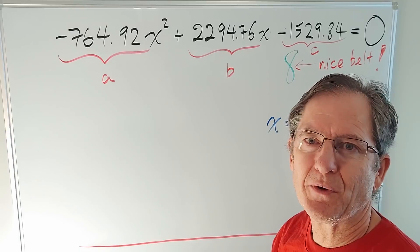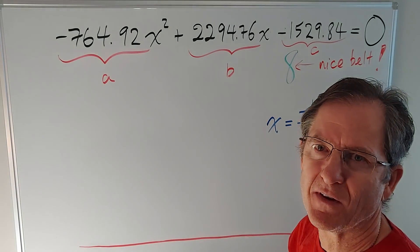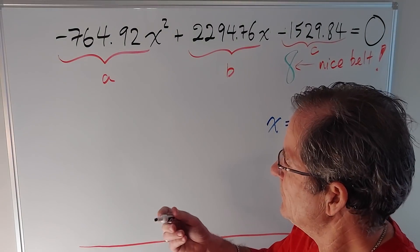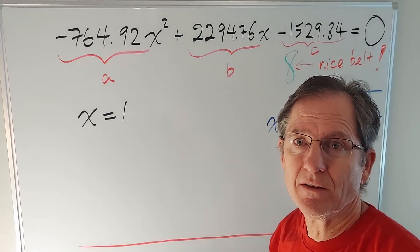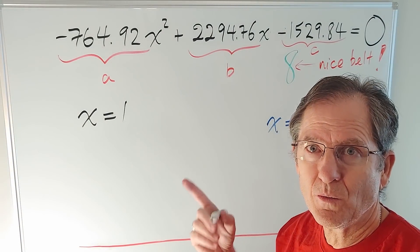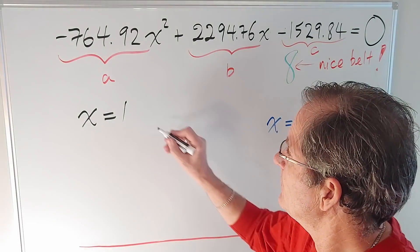However, there's also the brute force and ignorance method where you just guess numbers that satisfy that equation. And believe it or not, if you do guess, you will get x equals 1 as a solution. Plug in 1, prove to yourself that it works. You'll also get, believe it or not, 2.